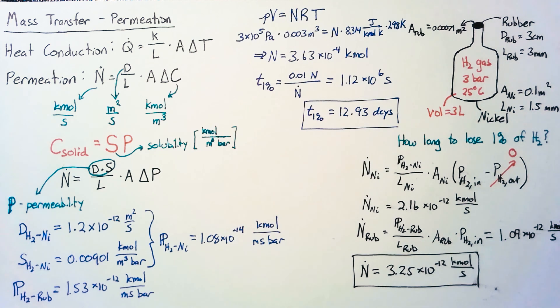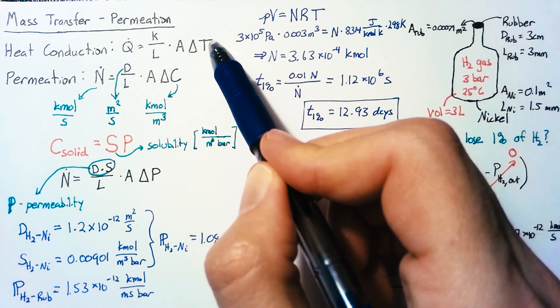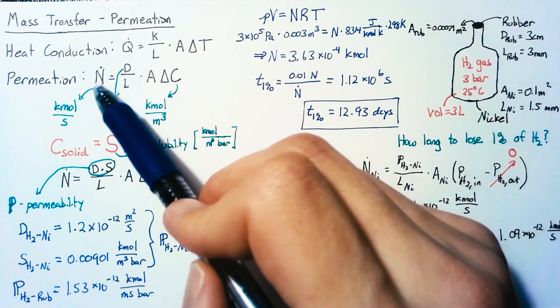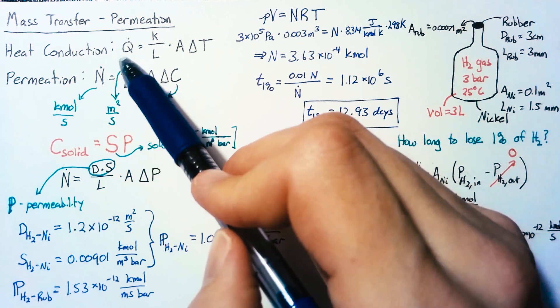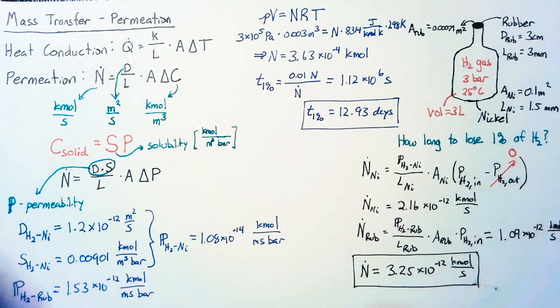The important things to note are the similarities of our permeation equation to our heat conduction equation. The major changes are what we're solving for, the diffusivity constant we're using, and the actual variable changing through the surface.